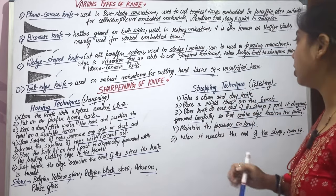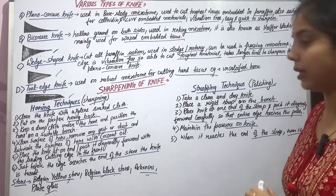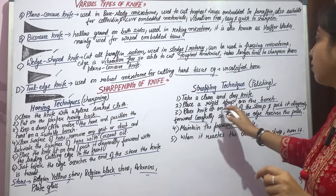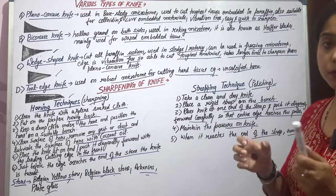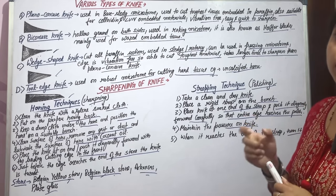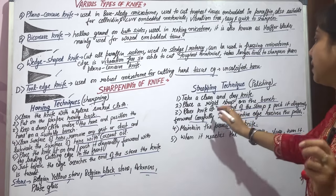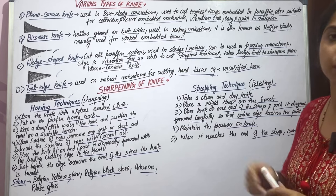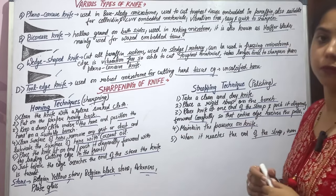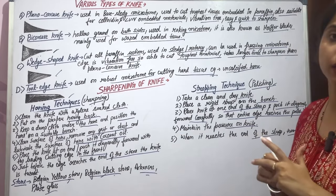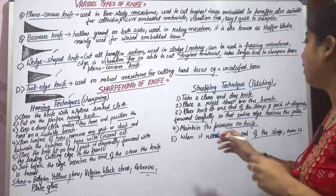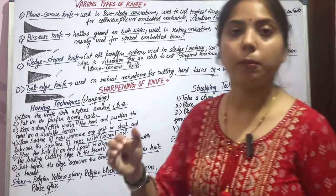After honing, polishing is done using the stropping technique with a leather strop. Take a clean dry knife and place the leather strop on the bench. Place the knife at one end of the strop and push it diagonally forward. Maintain steady pressure on the knife throughout the stroke so that it is polished properly. When the knife reaches the end of the strop, turn it and repeat.